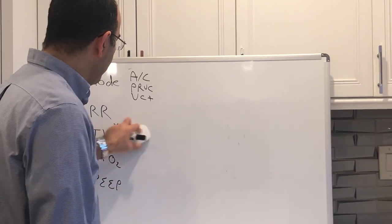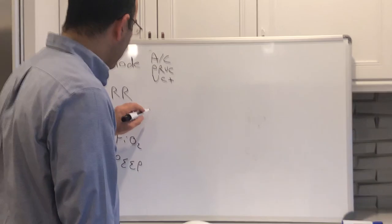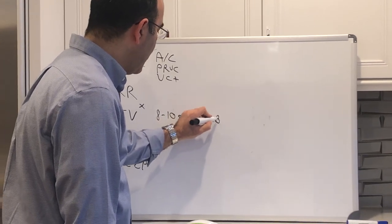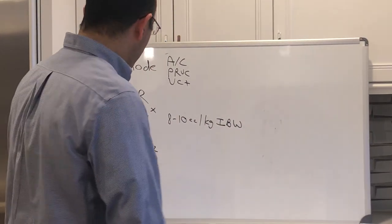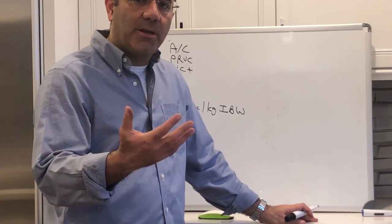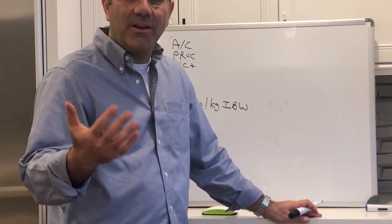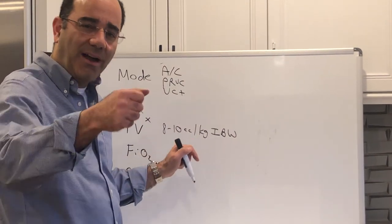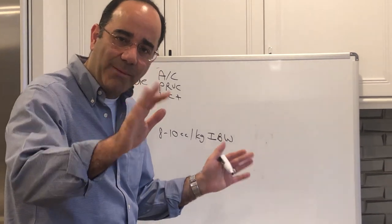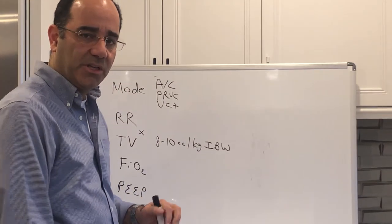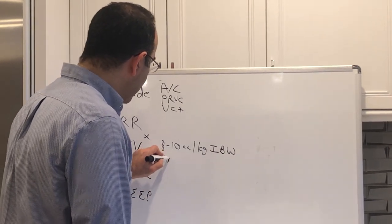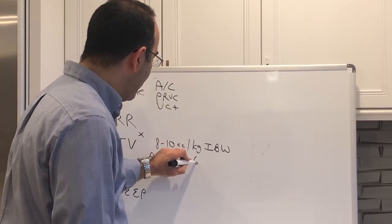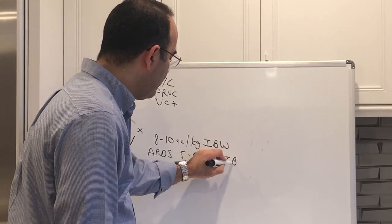The tidal volume in somebody who does not have ARDS should be roughly 8 to 10 cc's per kilogram of ideal body weight. If I come up to somebody and their ideal body weight is about 80 kilograms, 8 times 10 is 800, 800 cc tidal volume is a bit high. I would dial that down to maybe 650 milliliters. If they do have ARDS, you need to dial down the tidal volume. You really want to aim for a tidal volume somewhere in the neighborhood of 5 to 6 cc's per kilo ideal body weight.